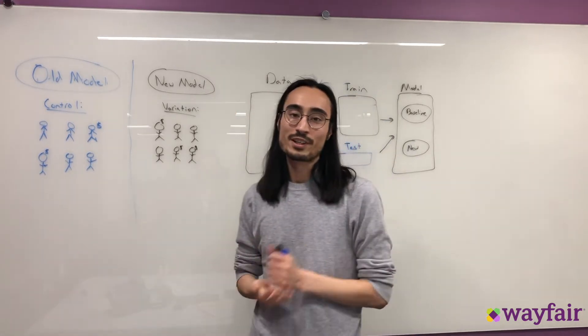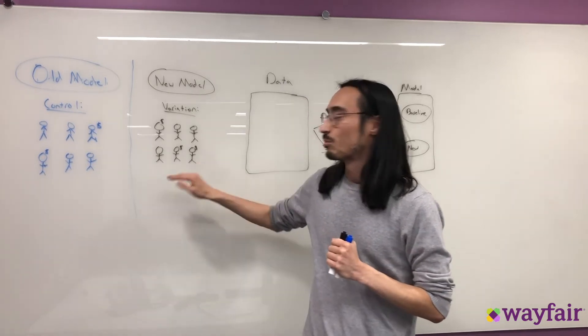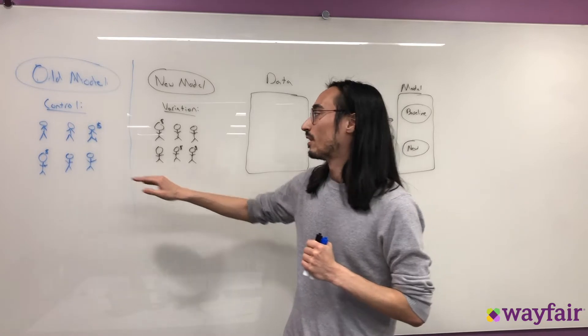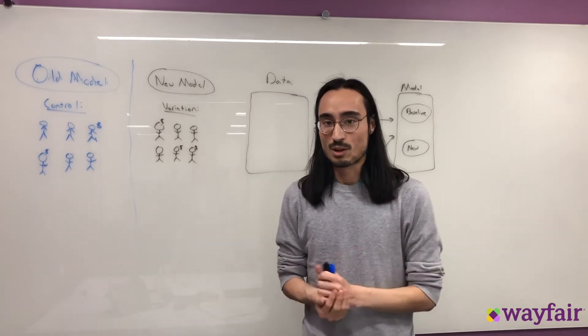We run this online A/B test for some designated amount of time and we try to find if there's a significant lift between customers in the variation and customers in the control. We might look at a target KPI like conversion rate, for example.